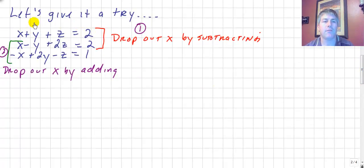I've already got some information here. Our three equations: x plus y plus z equals two, x minus y plus 2z equals two, and negative x plus 2y minus z equals one. Now, we could drop out the y's right away, but when I looked at all three, I noticed that we had a coefficient of one on all of the x's. So, I decided to drop out the x's of the first two equations by subtracting.